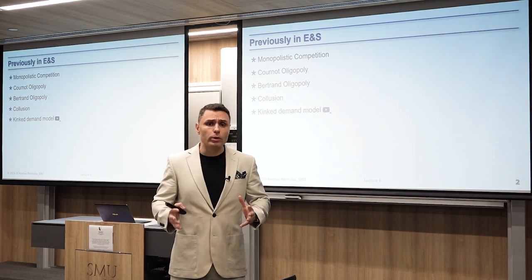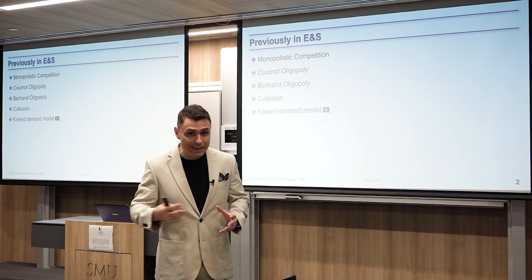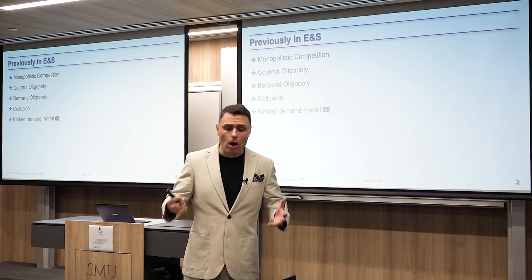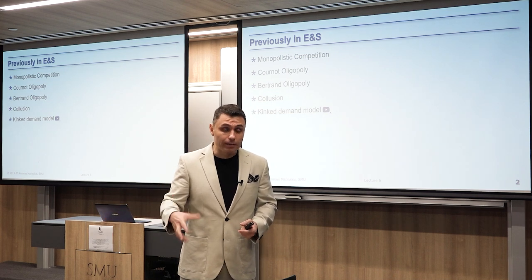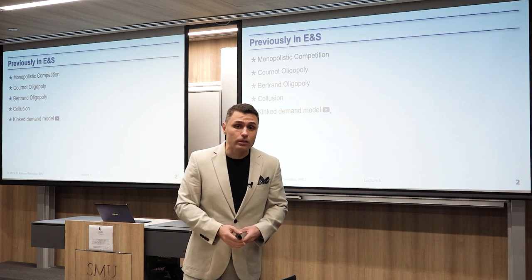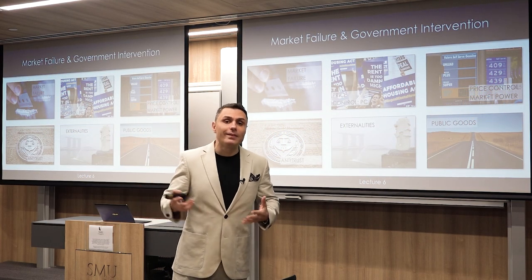Today, we are going to take everything we know so far about economics and put it into a market perspective, trying to be as realistic as possible. The main target of today's lecture is how the government or a regulator can intervene and affect market results. We'll cover market failure, price controls in perfectly competitive and monopolistic markets, antitrust laws in the United States and Singapore, externalities, and a brief introduction to public goods.